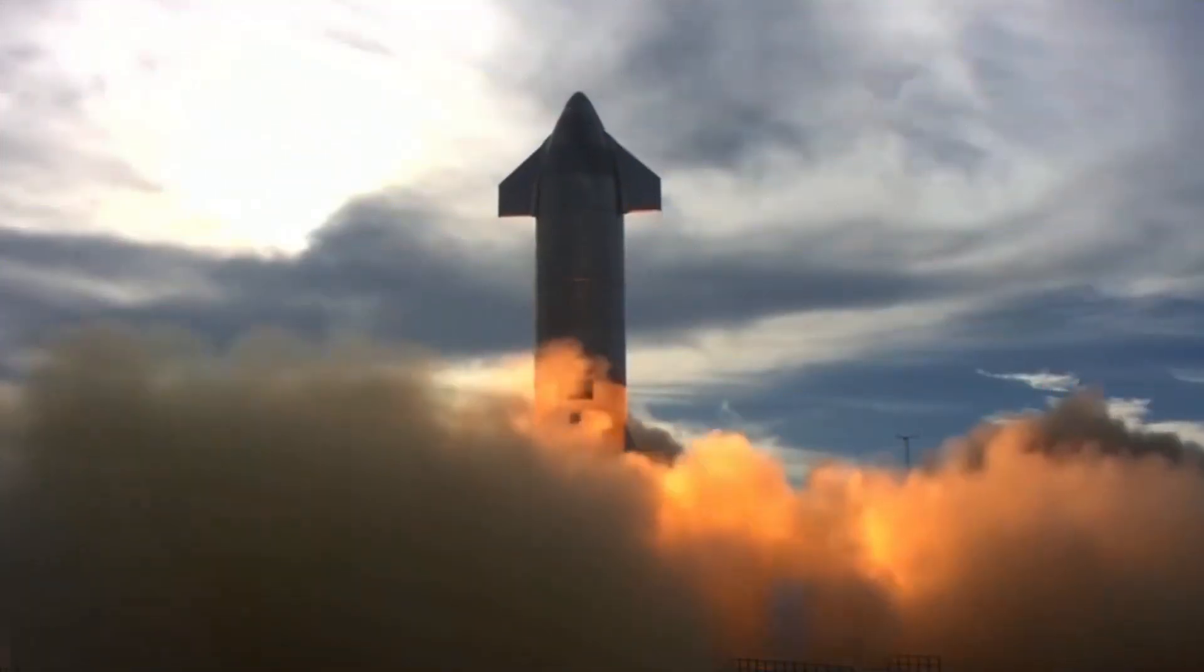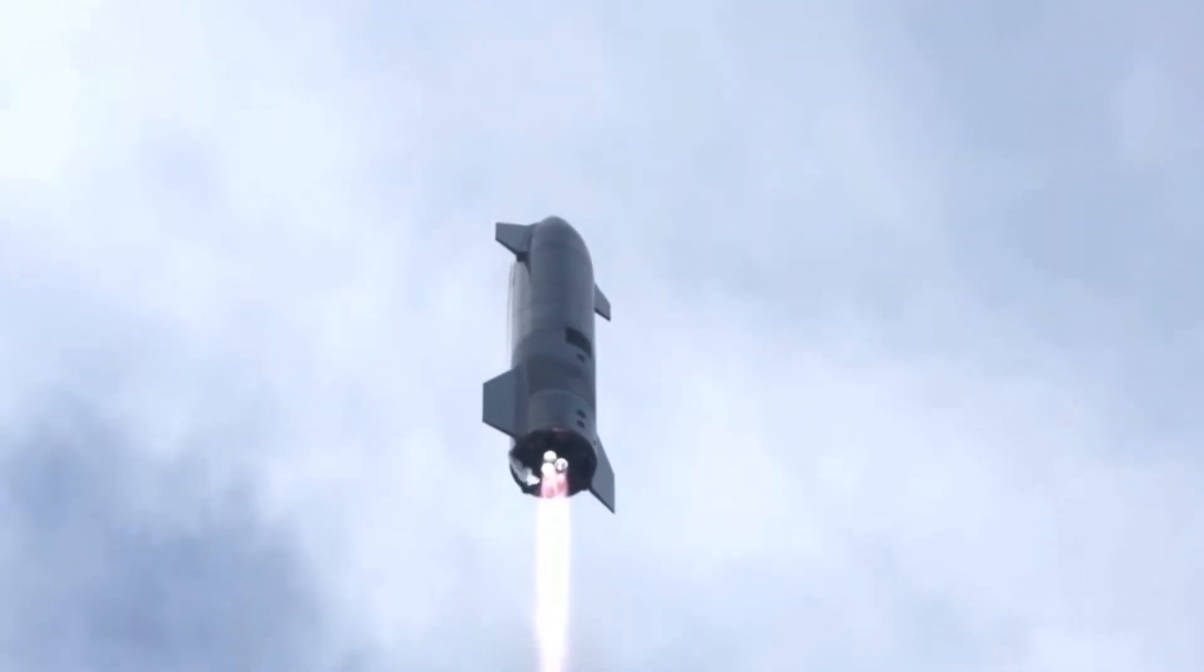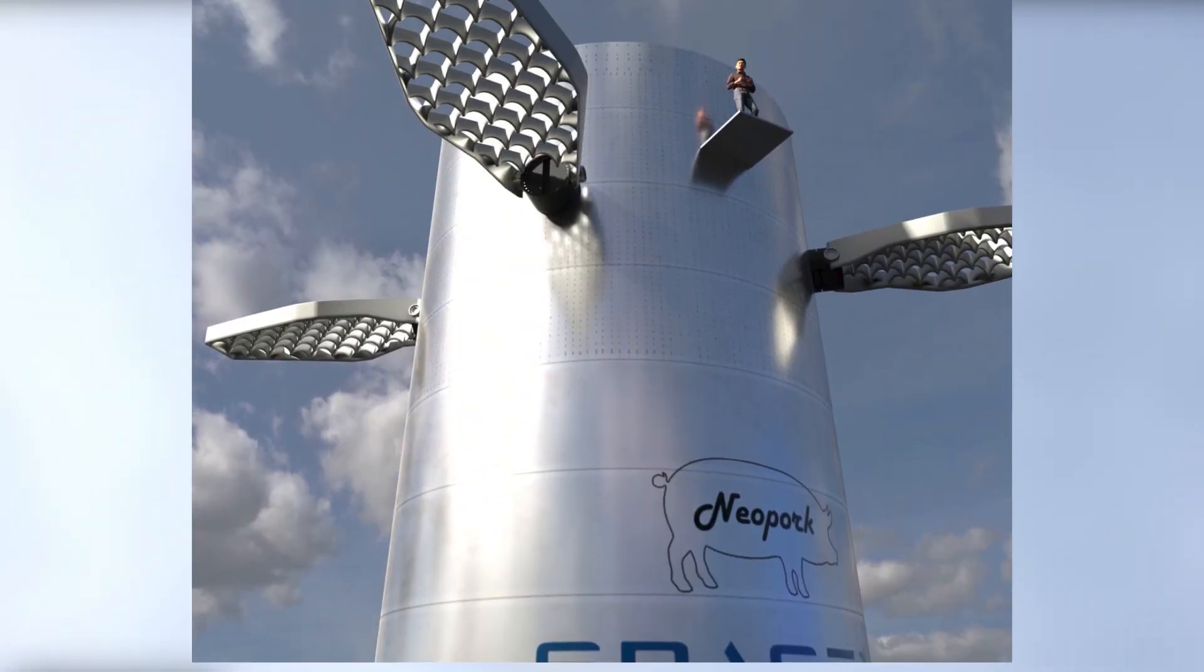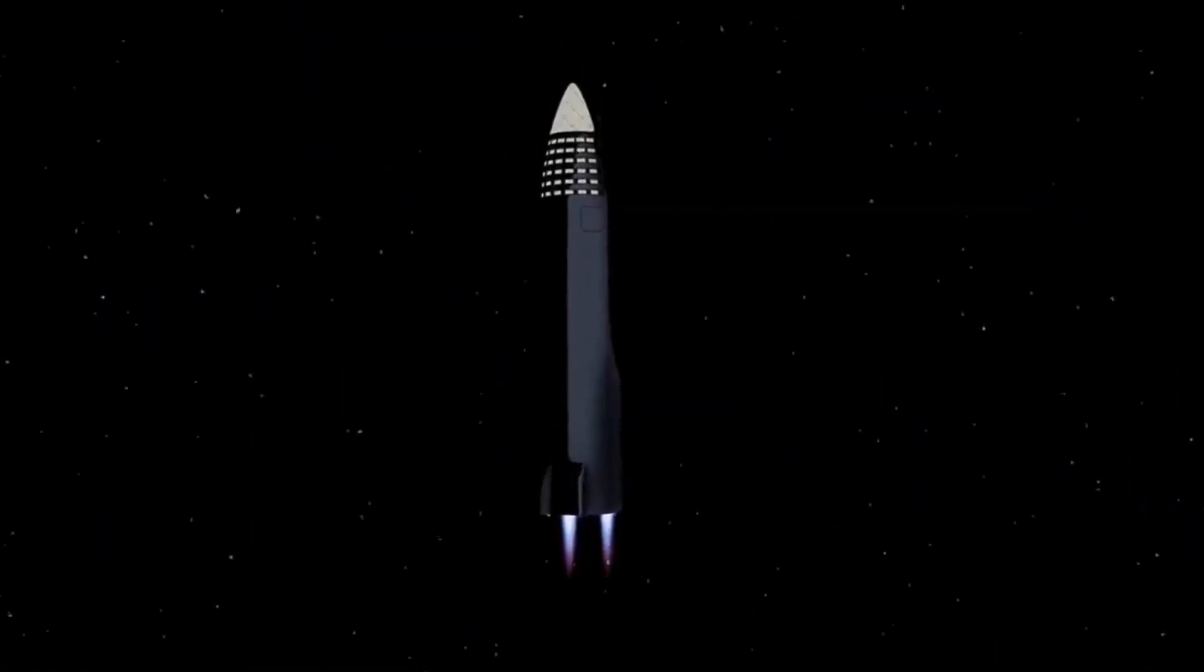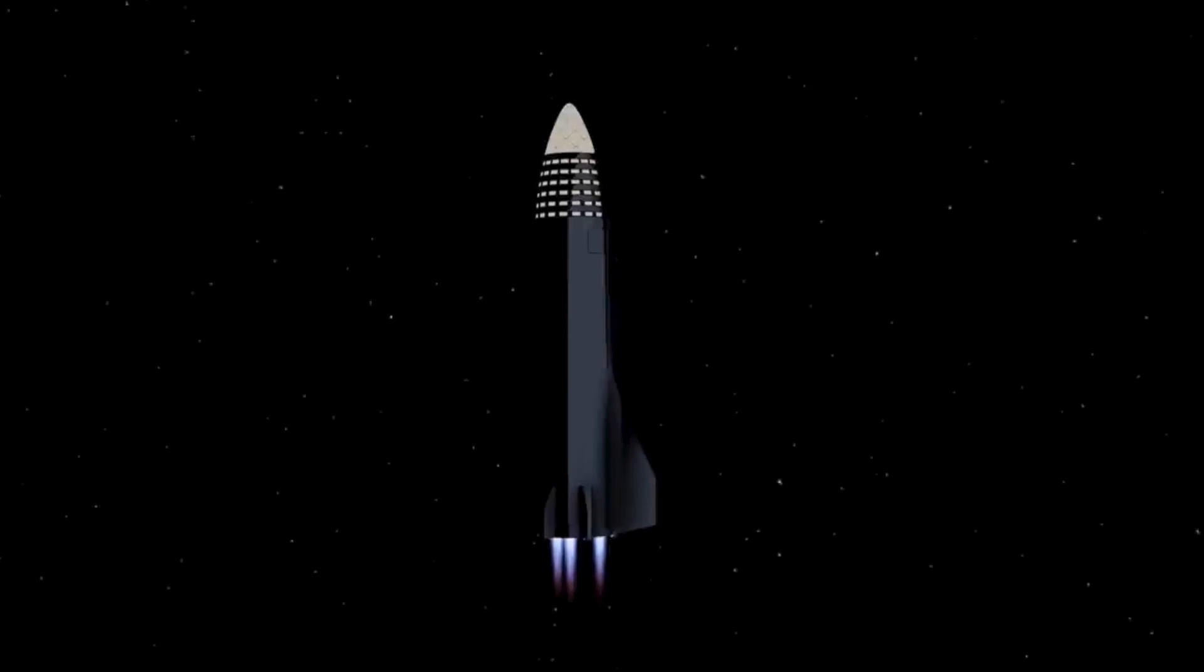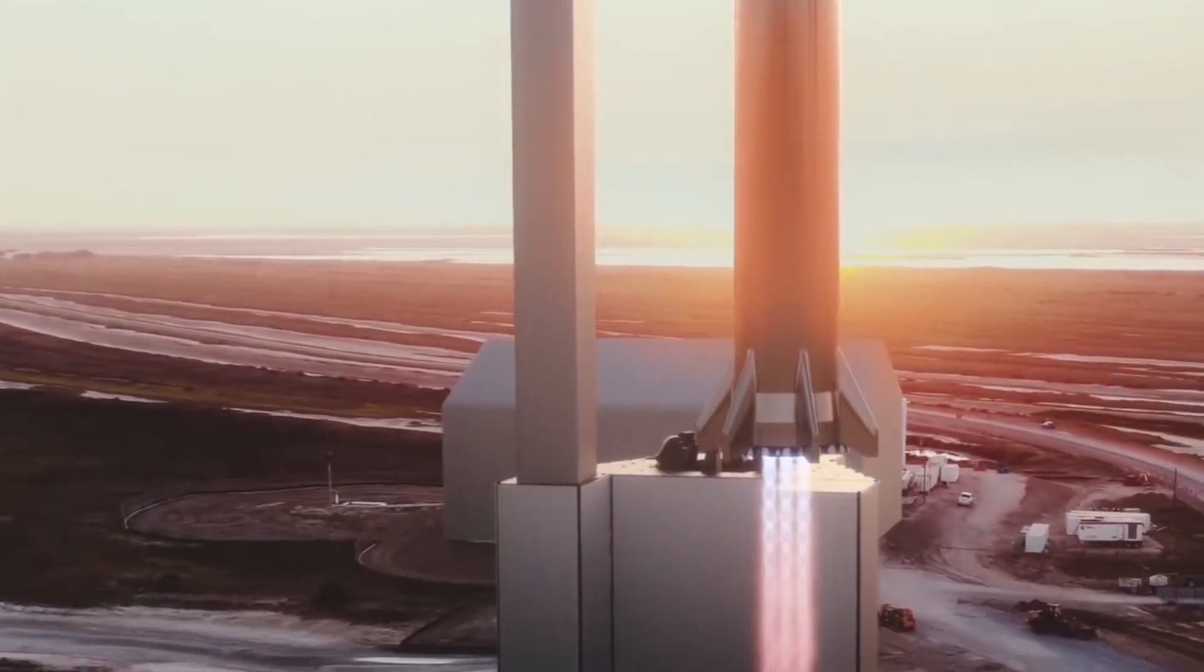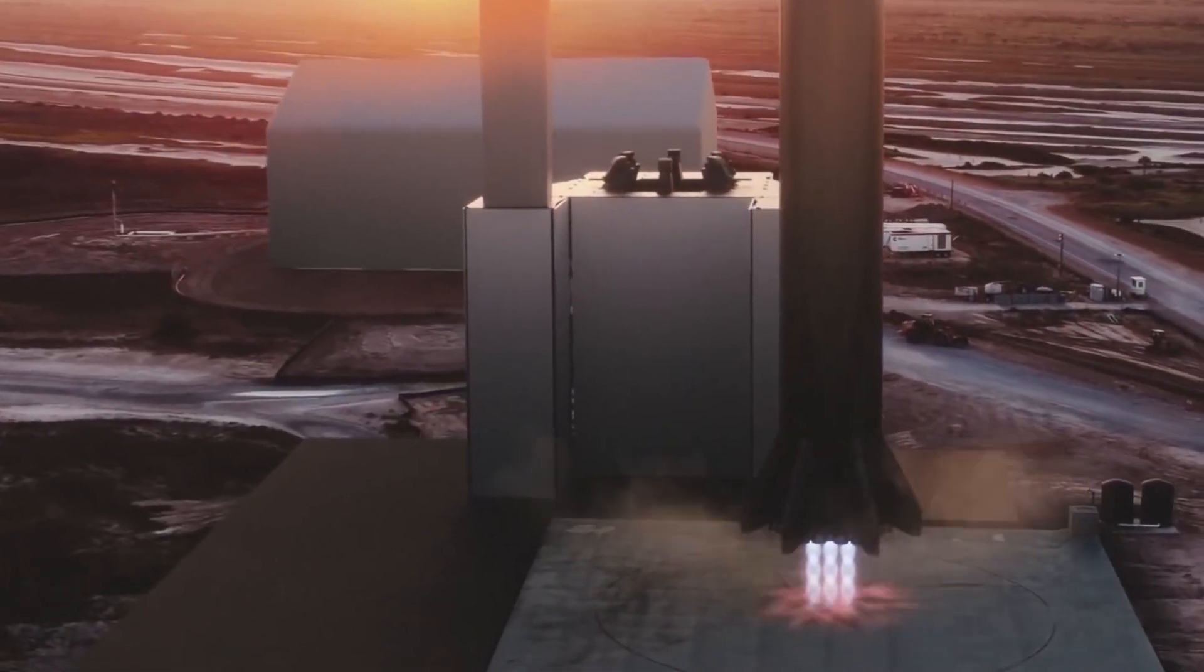SpaceX's new rocket prototype, the Starship, is set to be the biggest rocket ever built by man. The rocket comes in two stages. The first stage, which is called the Super Heavy Booster, and the second stage, which is called the Starship. The Super Heavy Booster is the booster stage that allows the Starship to escape the gravity and atmospheric pressure of the Earth. According to Musk, when the rocket is returning to Earth, it will be caught. Yes, like you catch a ball or something.